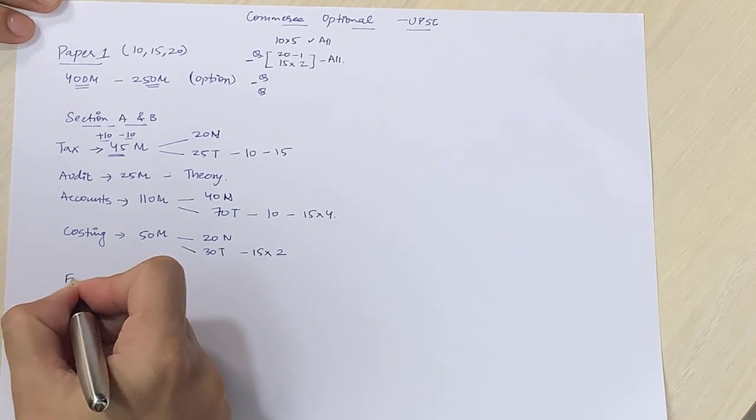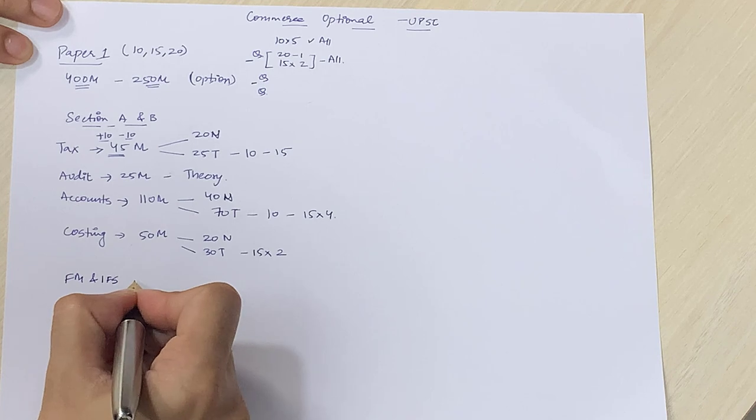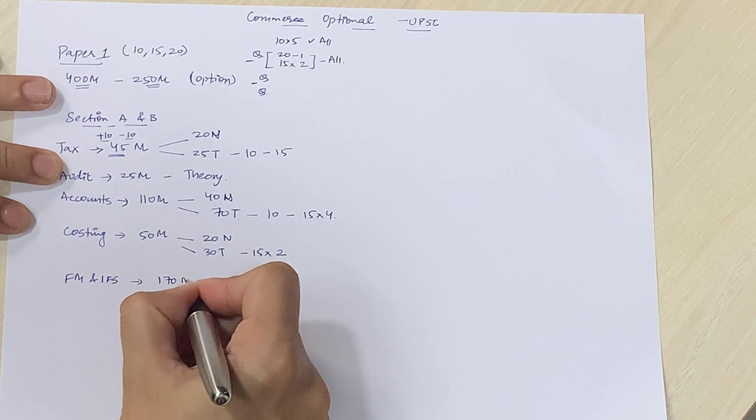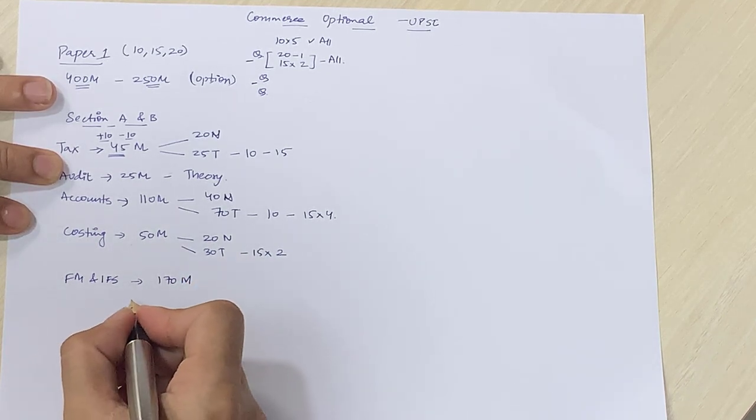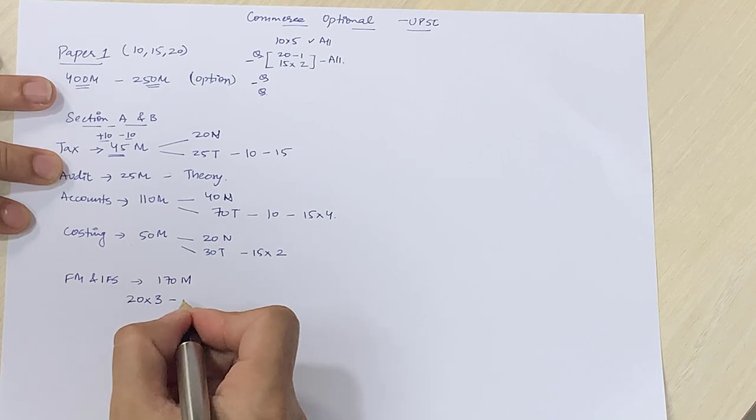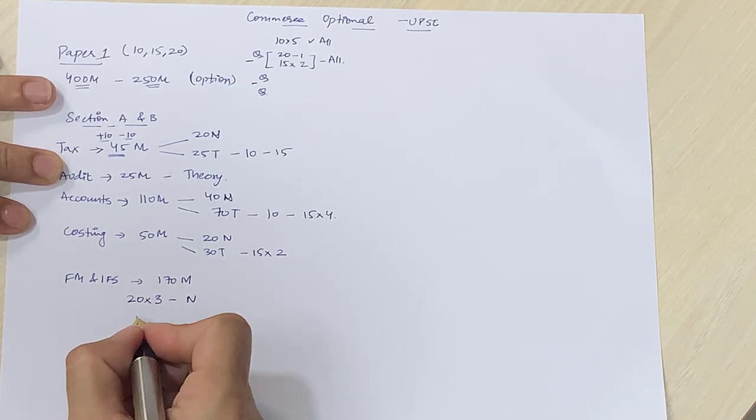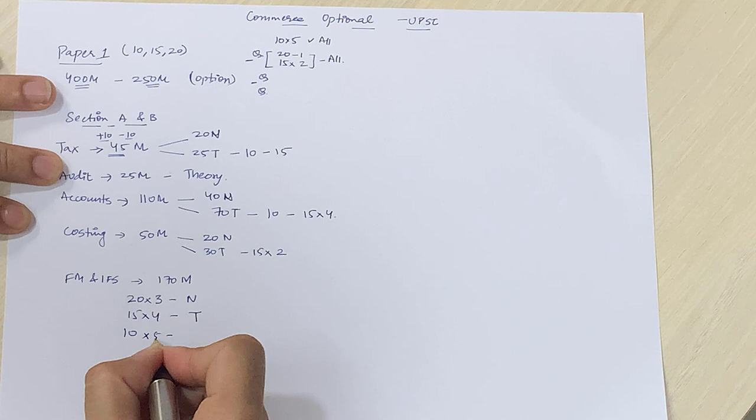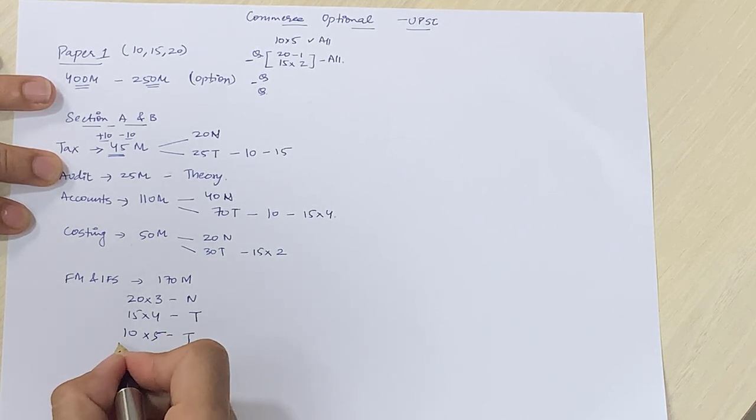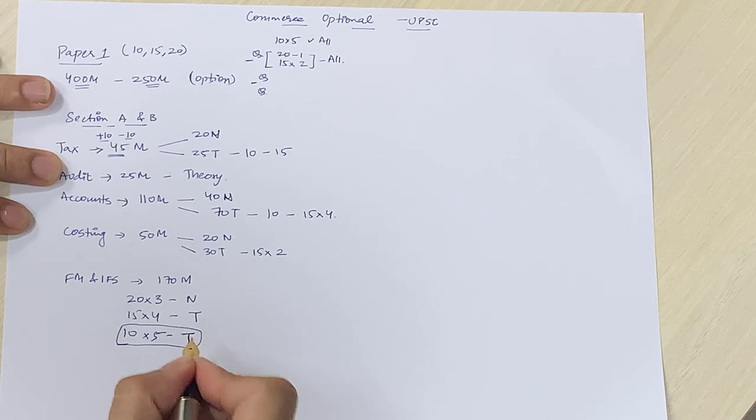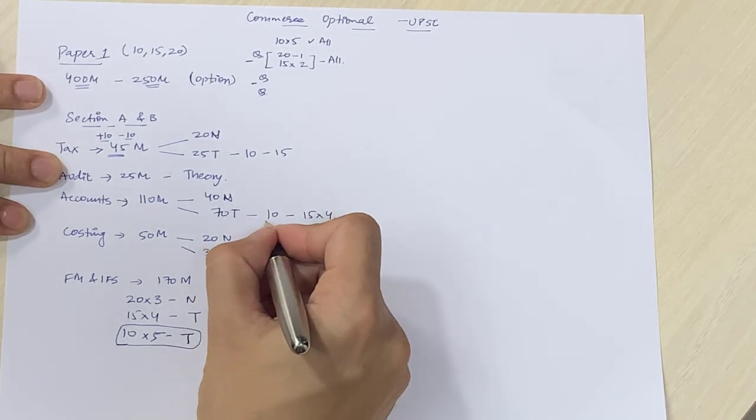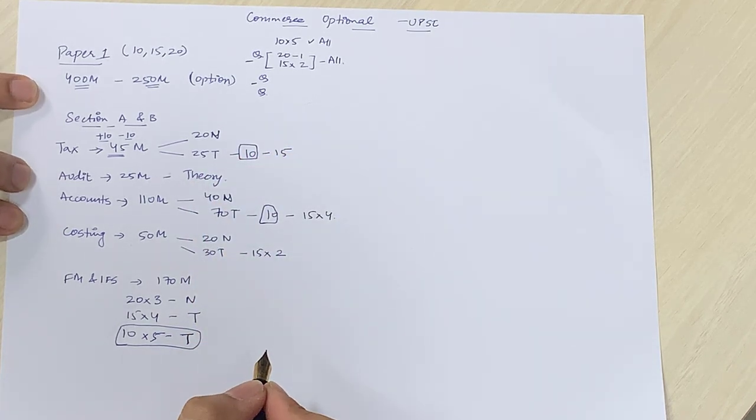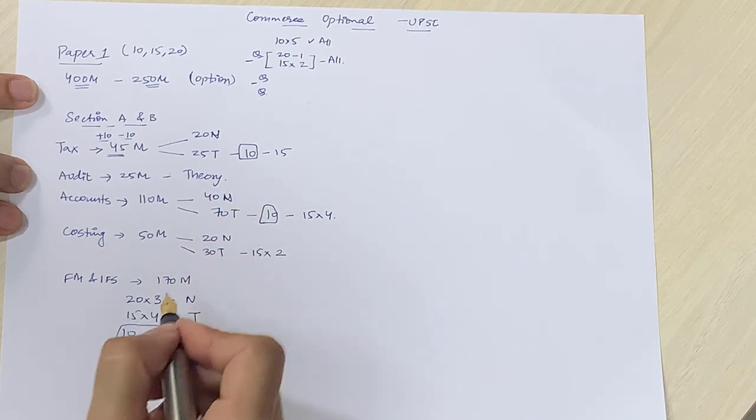The last and the biggest paper is FM and Indian financial system. Financial management and Indian financial system. Ismeh total on an average 150 to 170 marks ke questions aate hain. The breakup is 20 ke 3 questions which are numerical in nature. 15 marks ke 4 questions which are theory in nature. And 10 marks 5 questions. And these are all compulsory. So you have to understand. And they ko jitne bhi compulsory questions hain, those are very important. Those topics become very important. Yaha pa compulsory question hain.